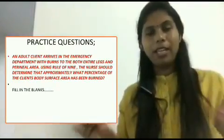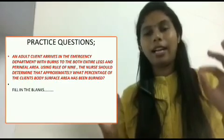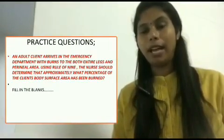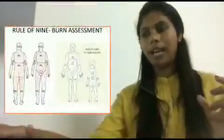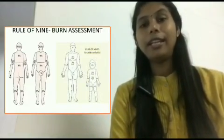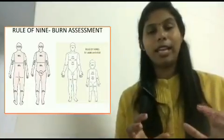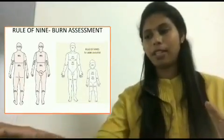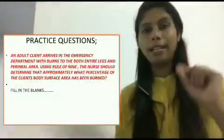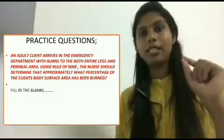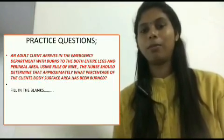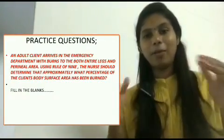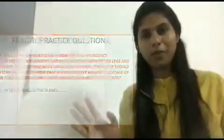The question states the client has burns on both entire legs and the perineal area. We know that one entire leg equals 18 percent, so two entire legs equals 36 percent. The perineal area in an adult is 1 percent. So the total body surface area burned is 36 plus 1 equals 37 percent. This is a straightforward question to clarify how we apply the Rule of Nine calculation.